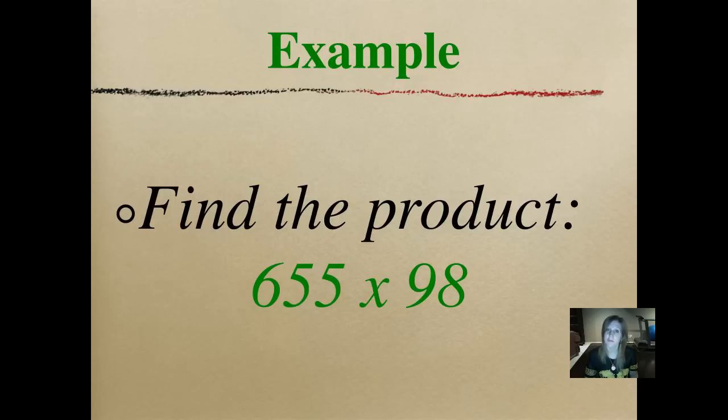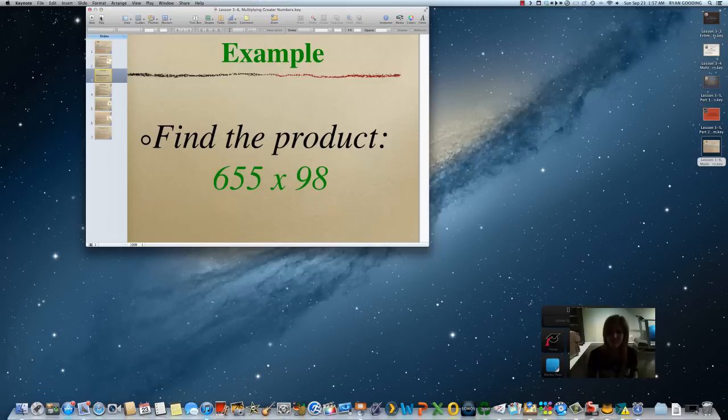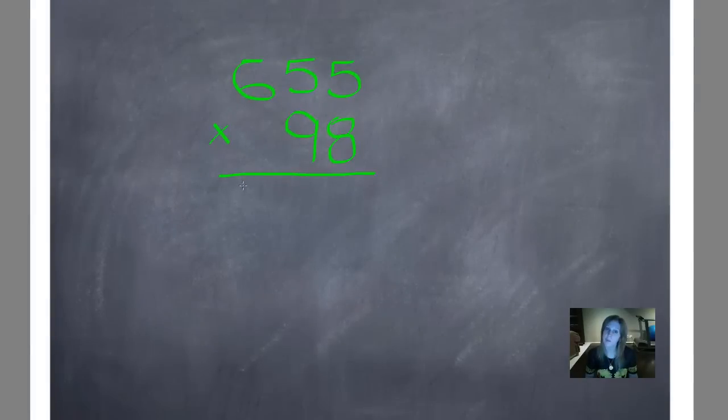Find the product 655 times 98. So I wrote the larger number on top. And again, I'm going to start multiplying by the number in the ones place. So I multiply straight up first. 8 times 5 is 40. Put my 0 down. Carry my 4. 8 times 5 is 40 plus 4 is 44. Put my 4 down and carry my 4. And now I'm just going to keep going. I'm going to move to the number in the hundreds place now. 8 times 6 is 48 plus 4 is 52. Now I'm done.